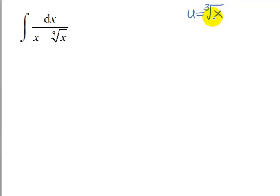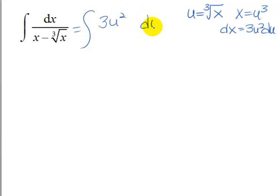Now what we're going to do is actually solve this for x then. So x would be u cubed and dx would be 3u squared du. So let's do that substitution. dx is 3u squared du and x was u cubed and then minus this was our u.